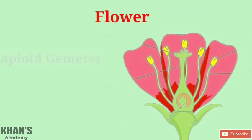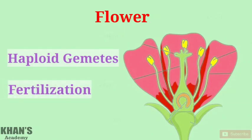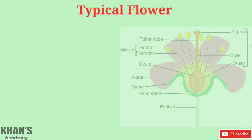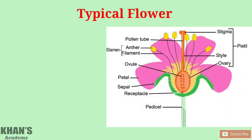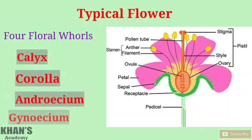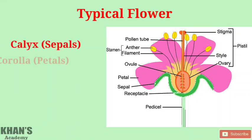In mature plants, the specialized structure for sexual reproduction is the flower. The flower has the function of producing haploid gametes and ensuring that fertilization takes place. A typical flower consists of four main parts or floral whorls: calyx, corolla, androecium, and gynoecium. Calyx is the group of sepals and corolla is the group of petals; both are accessory floral whorls.